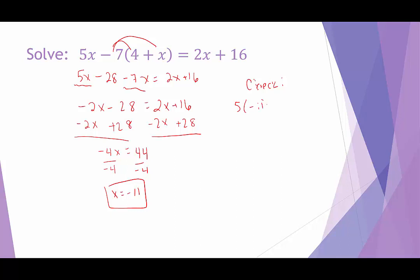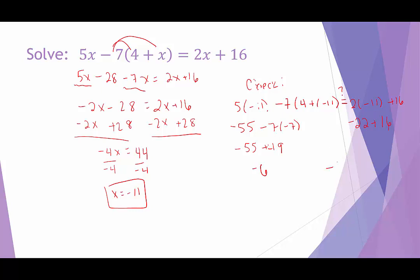So we're going to replace x with negative 11: 5 times negative 11 minus 7 times 4 plus negative 11. We want to make sure that equals 2 times negative 11 plus 16. Inside parentheses, 4 plus negative 11 is negative 7. Negative 7 times negative 7 is positive 49. Negative 55 plus 49 is negative 6. On the right side, 2 times negative 11 is negative 22, and negative 22 plus 16 is also negative 6.